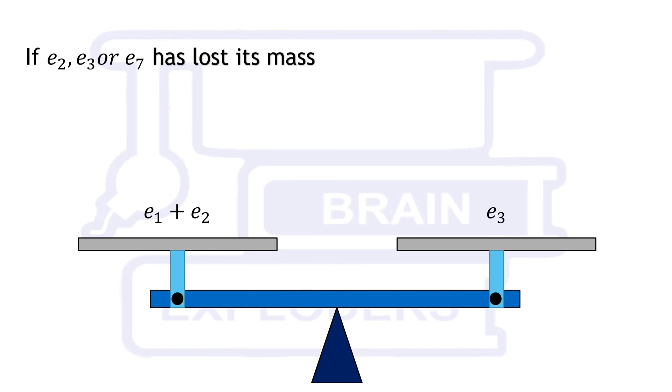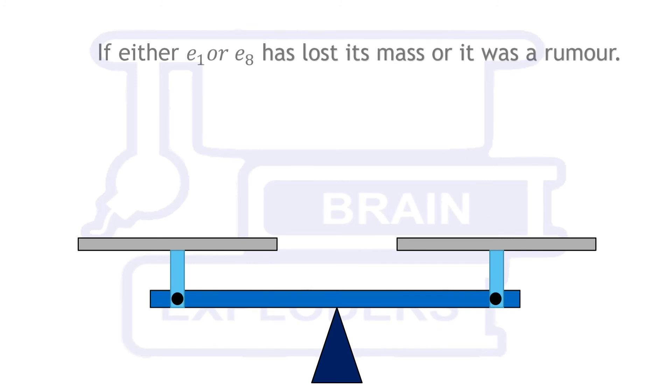If first weighing shows that either first or eighth elephant has lost its mass or it was a rumor then first elephant must be on one of the pan and eighth on the another. If both sides are equal again then it was a rumor otherwise we can find the elephant who has lost its mass.